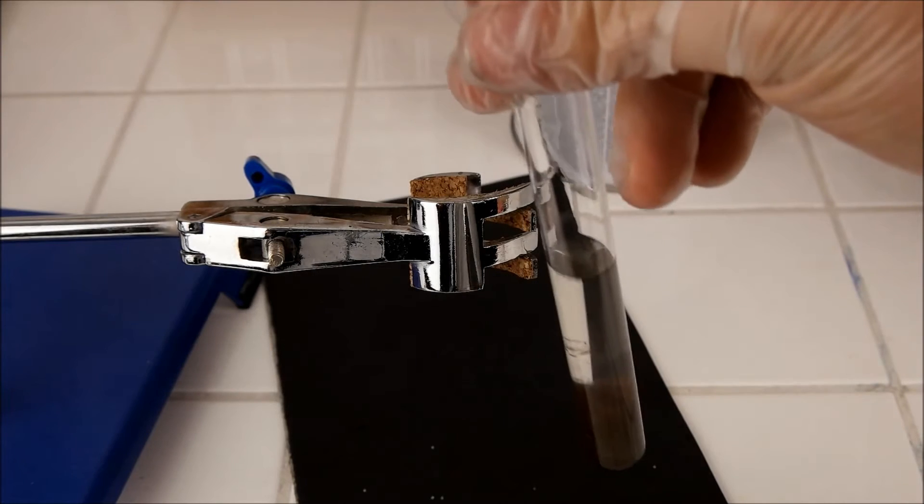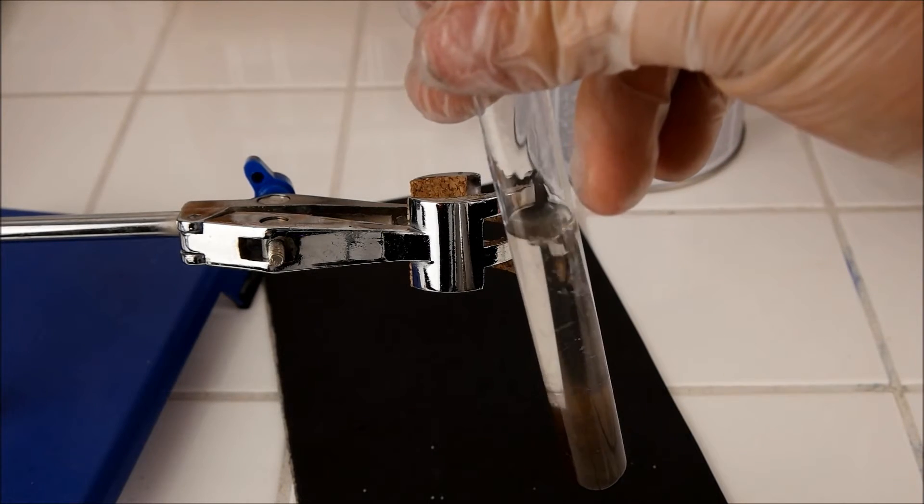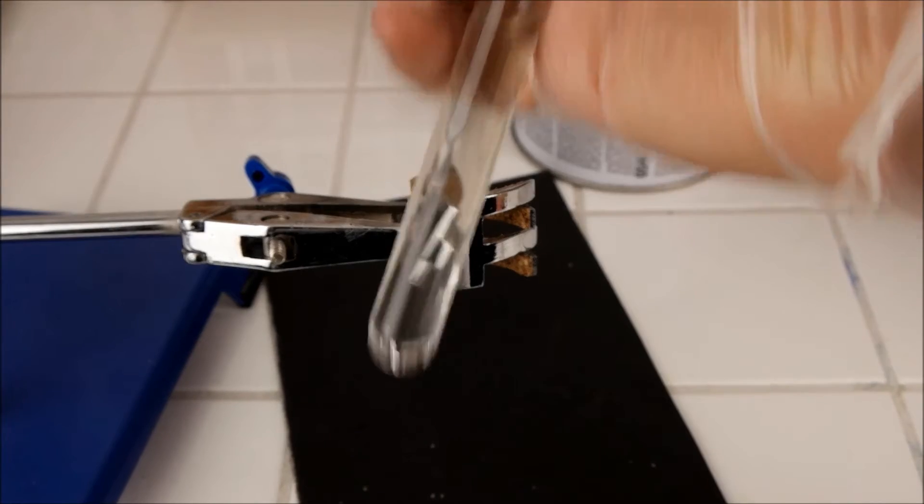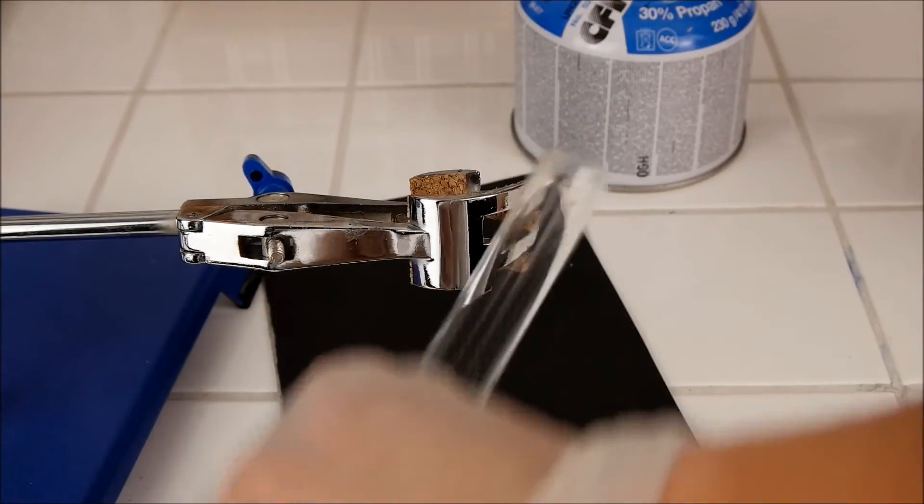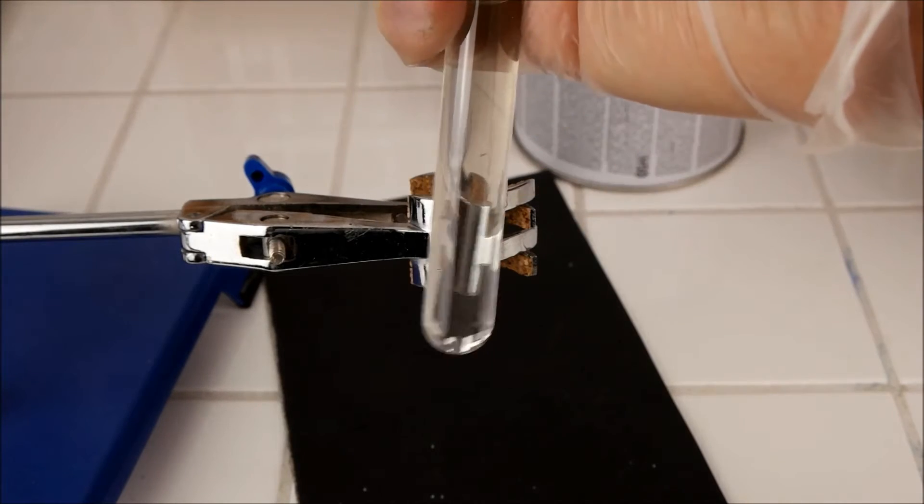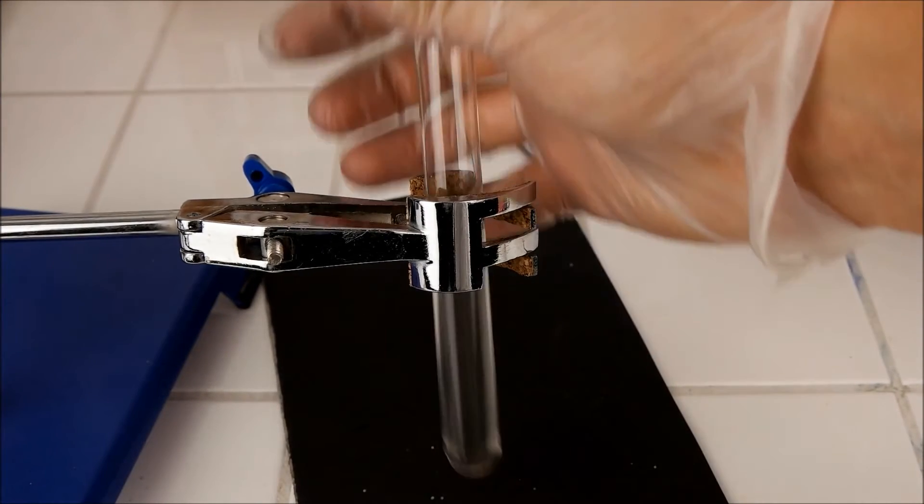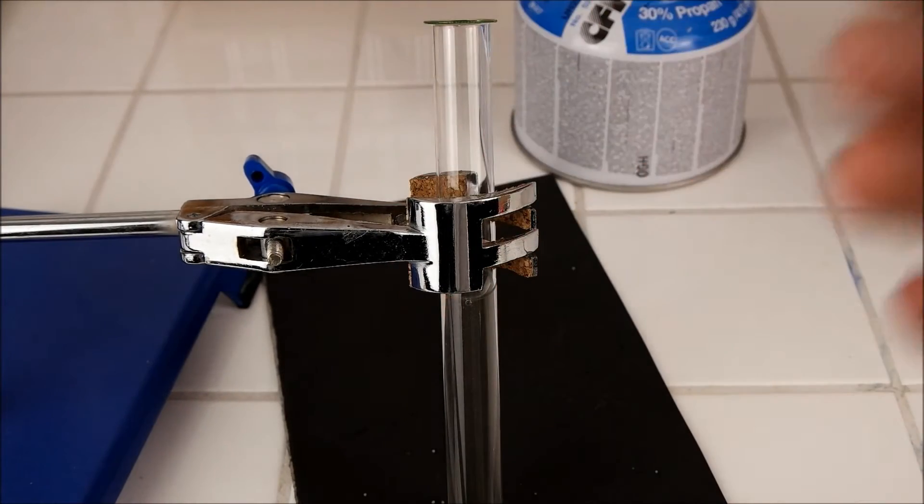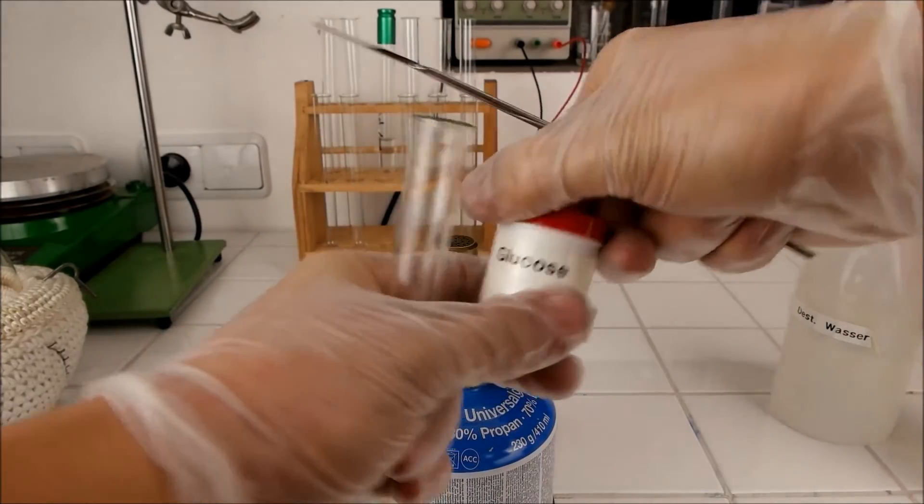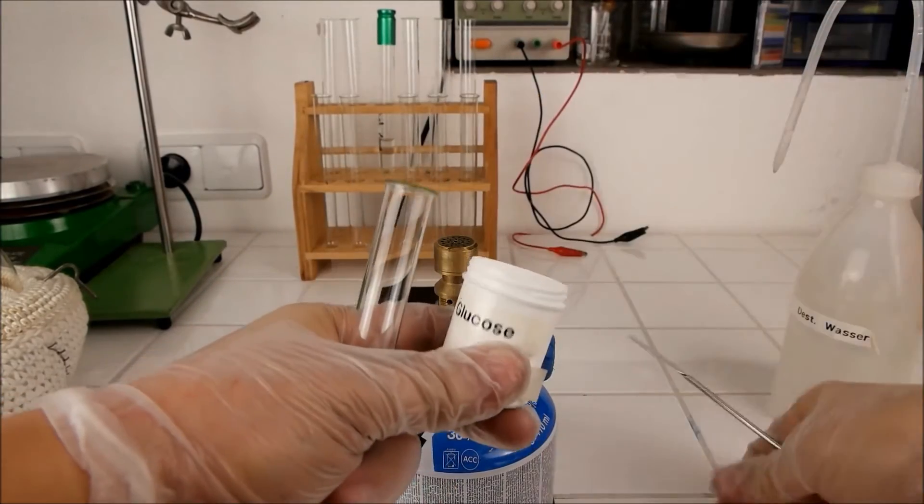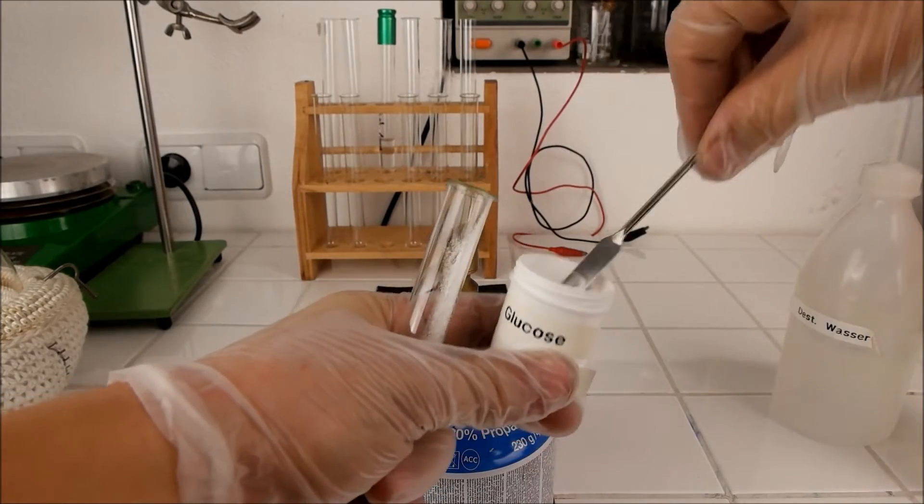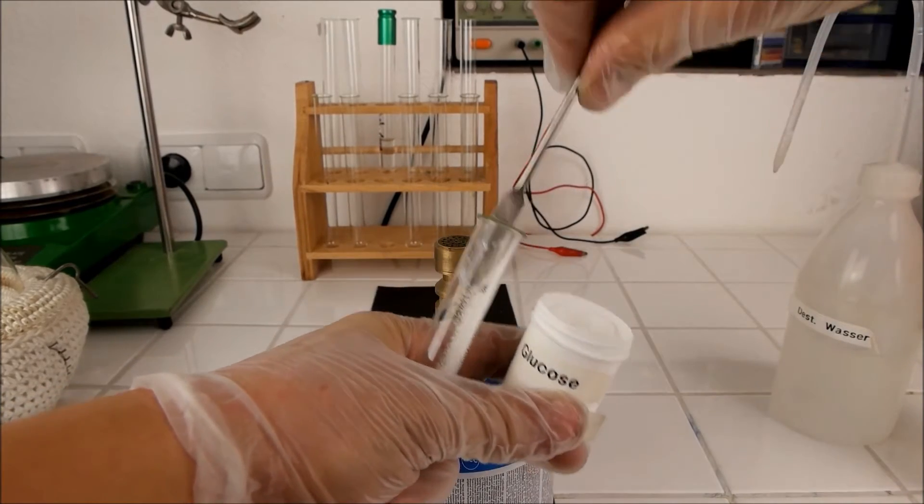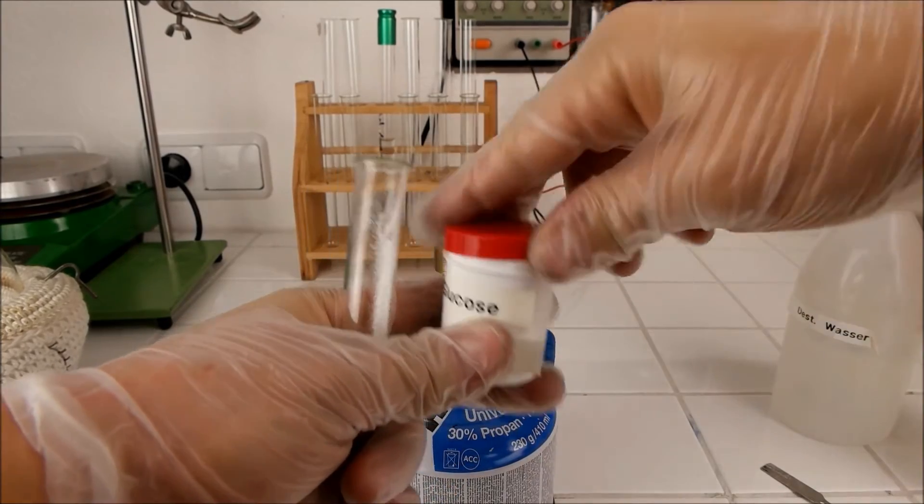Okay, we need some more ammonia. Now it's colorless again. And now you can just add the molecule you want to examine. Now I'll add some glucose to the solution, because that's the substance I want to check for an aldehyde group, should be enough.